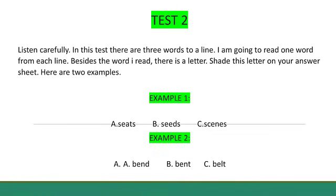Here are two examples. Example 1. Seeds. The word I read was S-E-E-D-S, seeds. So the correct answer for example 1 is B. This is recorded by shading answer space B against number 1. Example 2. Bent. The word I read was B-E-N-T, bent. So the correct answer for example 2 is A. This is recorded by shading answer space A against number 2.